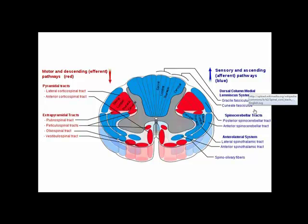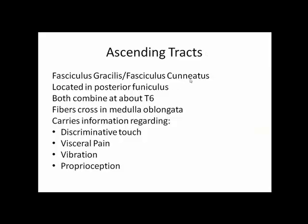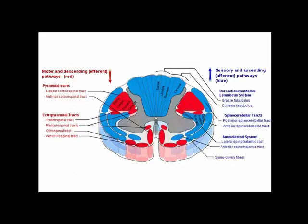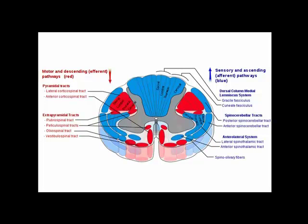The first couple of tracks we'll look at are the gracile fasciculus and cuneate fasciculus, or the fasciculus gracilis and fasciculus cuneatus. The fasciculus gracilis and fasciculus cuneatus are both located in the posterior funiculus of the spinal cord. They really combine to form one tract located in the posterior funiculus.